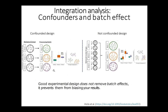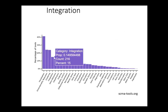You want a balanced, non-confounded design — you don't want your batch to match exactly your variable of interest. Good experimental design does not remove batch effects, but it prevents them from biasing your results. And here is the picture of single-cell RNA tools: there is a category called integration with over 200 tools, so as always we won't discuss them all.